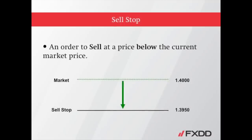A sell stop order is a pending order you place when you wish to sell at a price below the current market price. As an example, if the EURUSD is currently trading at 1.40 bid and you wish to sell only if it drops to 1.3950, you may consider setting a sell stop order at 1.3950. This would imply that you're speculating that the market would proceed downward after the order is triggered.